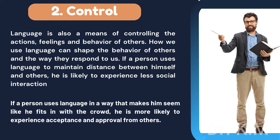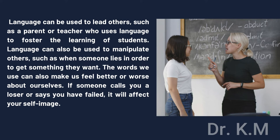Control: language is also a means of controlling the actions, feelings, and behavior of others. How we use language can shape the behavior of others and the way they respond to us. If a person uses language to maintain distance between himself and others, he is likely to experience less social interaction. If a person uses language in a way that makes him seem like he fits in with the crowd, he is more likely to experience acceptance and approval. Language can be used to lead others, such as a parent or teacher who uses language to foster learning, or to manipulate others, such as when someone lies to get something they want. The words we use can also make us feel better or worse about ourselves — if someone calls you a loser or says you have failed, it will affect your self-image.